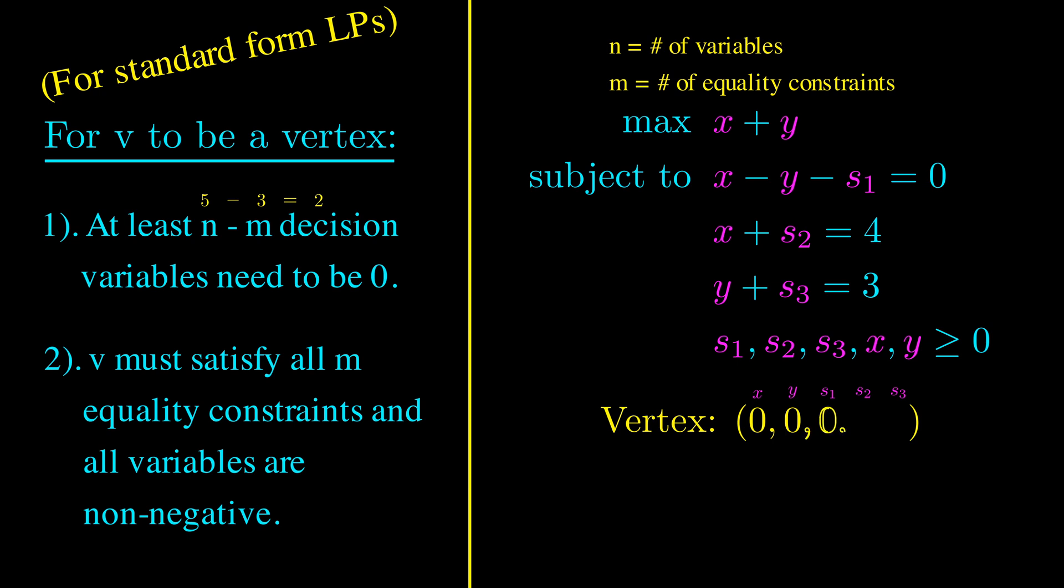We can solve for the slack and surplus variables using the equality constraints, giving us the following solution. There's actually a term for the variables we force to be 0. These are called non-basic variables. As you can guess, the other variables are called basic variables.